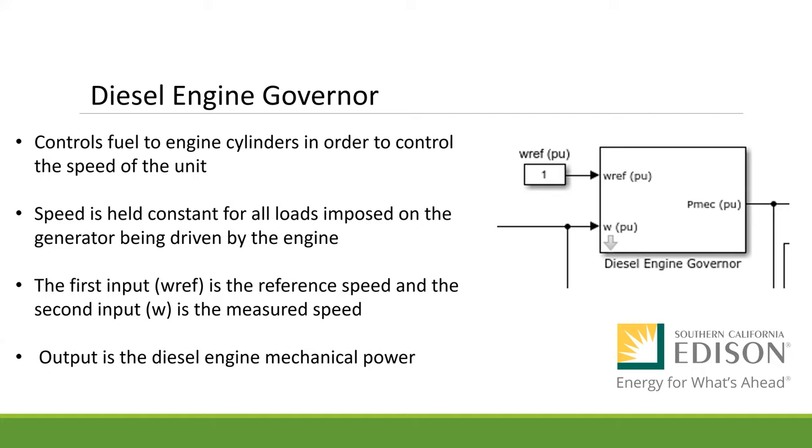The diesel engine governor controls fuel to engine cylinders in order to control the speed of the unit. The speed is to be held constant for all loads imposed on the generator being driven by the engine. The first input is labeled WREF and is the reference speed. The second input is labeled W and is the measured speed. Output is the diesel engine mechanical power.